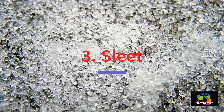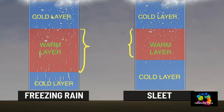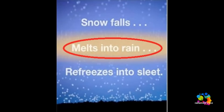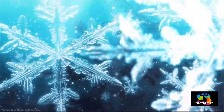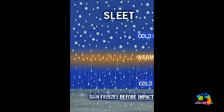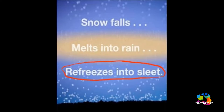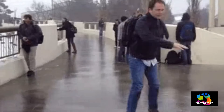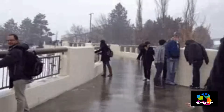Coming to the next form of precipitation: sleet. If we add a little bit more cold air just above the surface, the snow gets partly melted as it passes through a thin layer of warm air. Once it has melted, it can never become a snowflake again. And now when it passes through a freezing temperature again near the ground through a thick layer of cold air, this water drop freezes into a little ice pellet or sleet. Sleet can also create a slick condition on roadways.